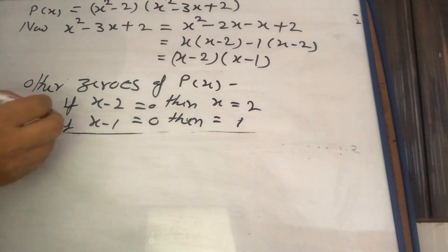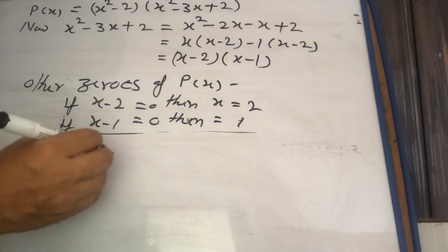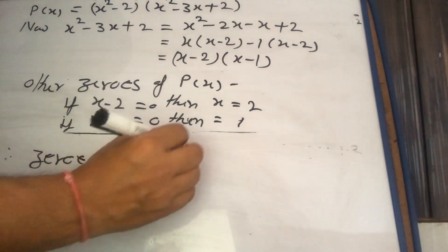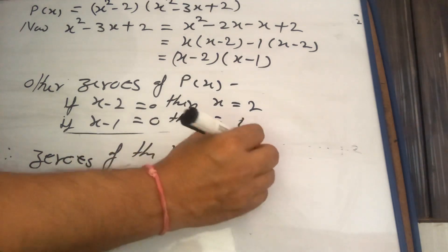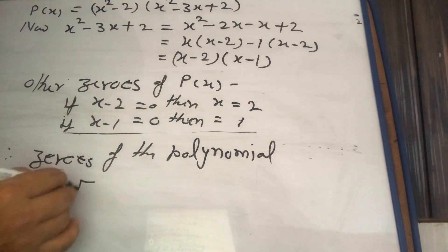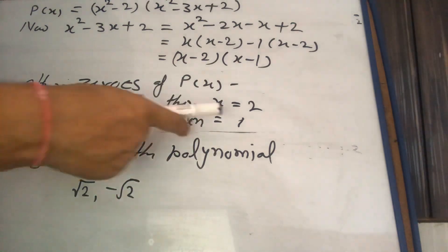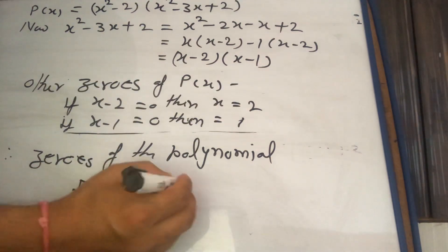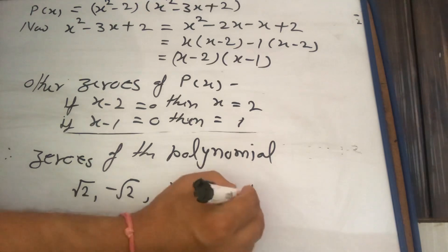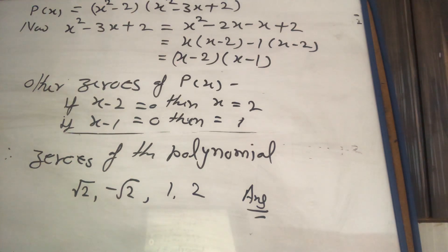Therefore, the zeros of the polynomial are: √2, −√2 (already given), and 1 and 2 (just found). This is your final answer. I think the process is clear for you. If you have any doubt, any problem, or any question, you can comment in the comment box. Thank you.